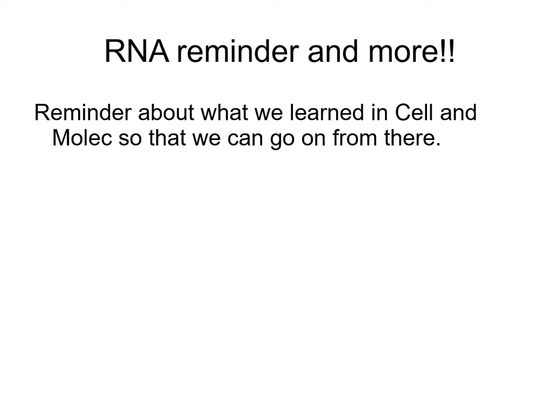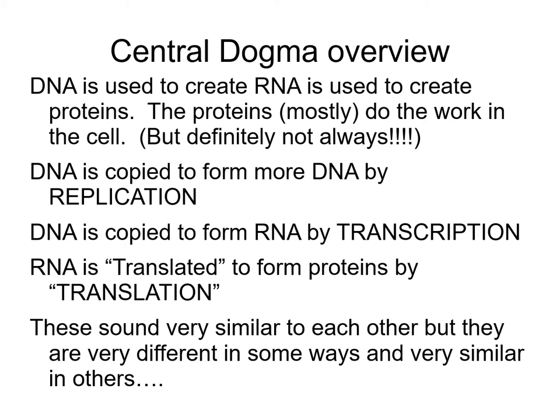Remember the central dogma: DNA is used to create RNA, which is then used to create proteins, and the proteins of course do a lot of work in the cell. For this section of the course we're going to focus on the RNA part. DNA is copied by replication, we form RNA by transcription, and translation is where we produce proteins. Please don't use the wrong word — transcription means production of RNA, and translation means production of proteins.